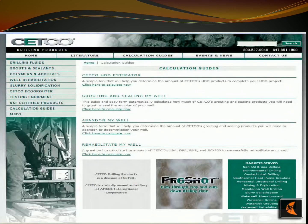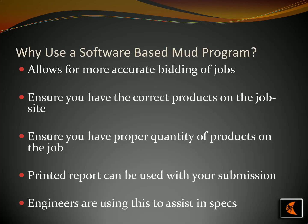Setco Online Calculation Guides provide a library of information pertinent to bentonite mining. It includes interactive calculators that allow users to accurately determine the amount of material they will need for their projects. It is an ideal resource for making sure each bentonite mining project is a success. Software can be a great asset to companies in the bentonite mining industry when bidding for jobs, allowing companies to make sure they have the right products for the job at the right quantity. Moreover, they are able to produce a printed report for job submission, and engineers can take advantage of such programs to help with project specifications.